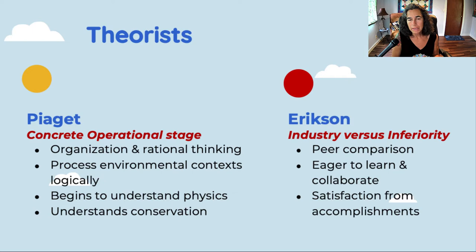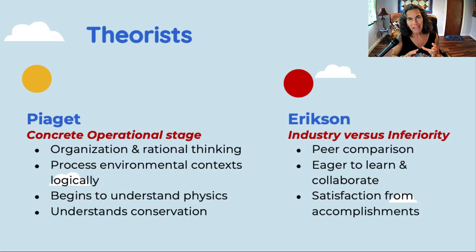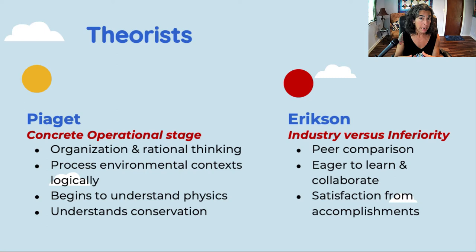This stage is also characterized by something called conservation. What Piaget meant by conservation is that children understand that if a material is manipulated — say you have a ball of clay and you flatten it — it still has the same amount of material or mass, whether it's round or a different shape. The classic example is a glass of water: a tall skinny glass and a squat wide glass can contain the same amount of water, even though it looks different. It's the beginning of rational, logical thinking about natural laws.